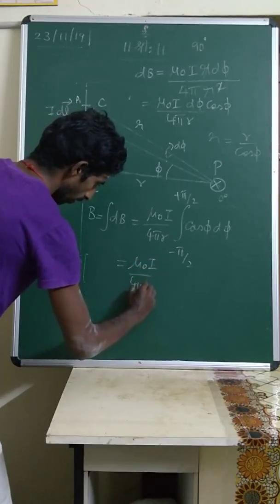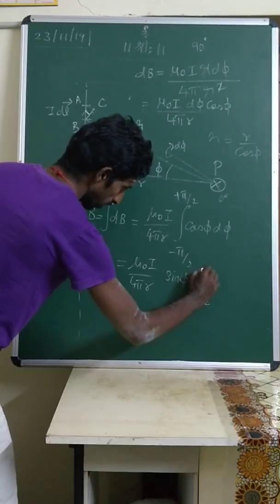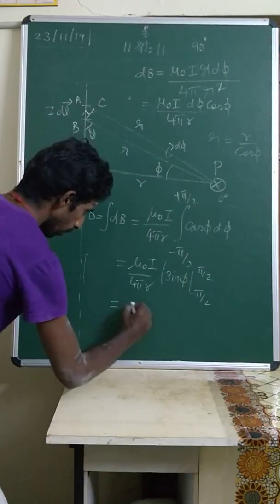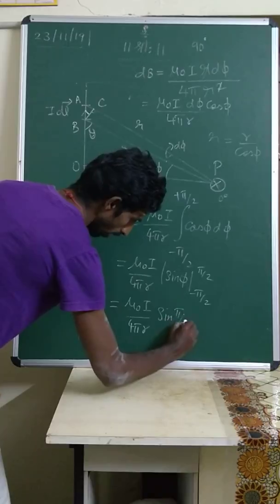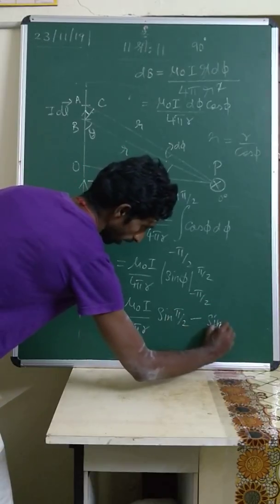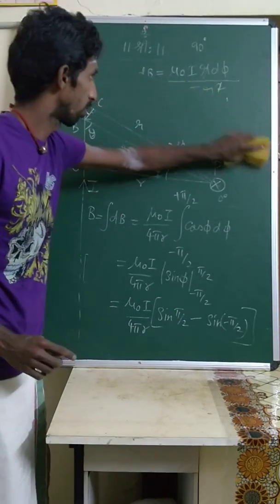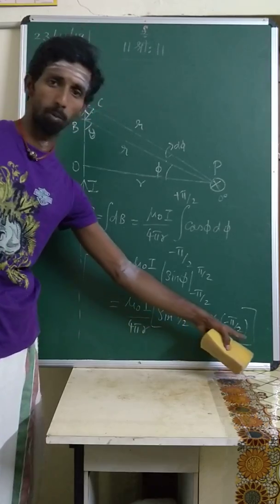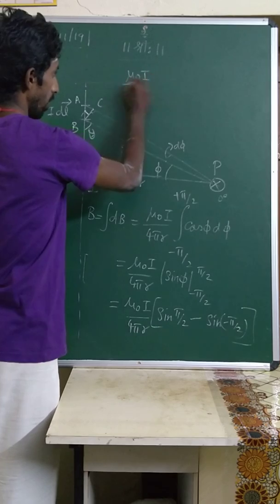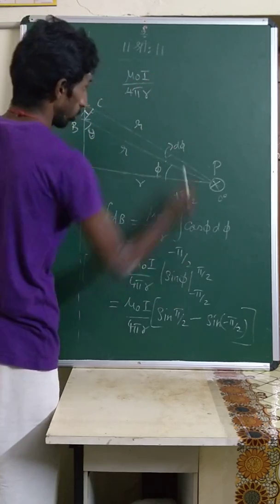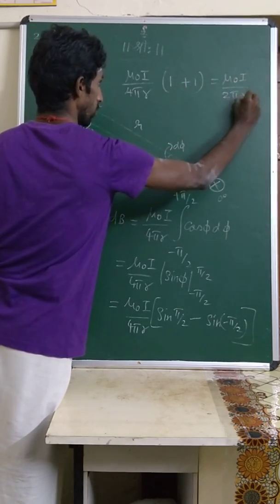Integrating cos φ gives sin φ. Evaluating between limits: sin(π/2) minus sin(−π/2). Since sin(−θ) = −sin θ, sin(−π/2) = −1. So the result is 1 minus (−1) = 2. Therefore B = μ₀·i / (4π·r̄) × 2.